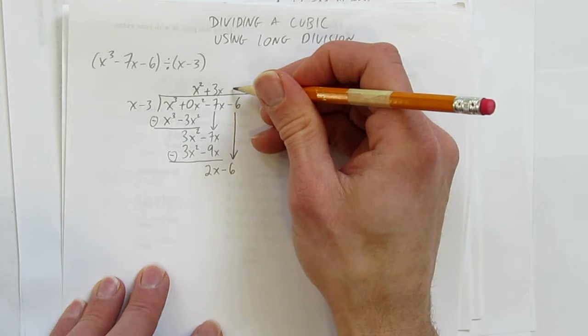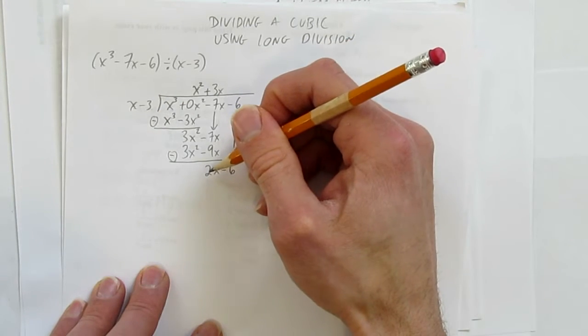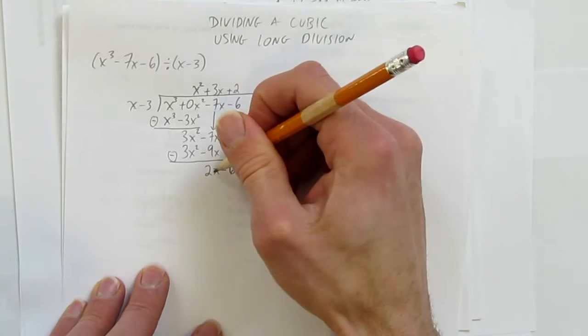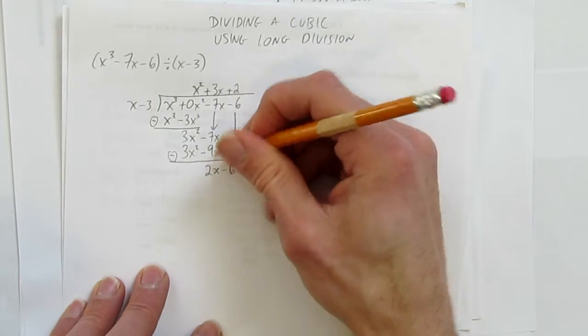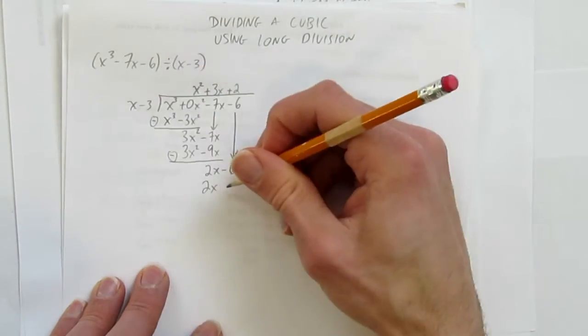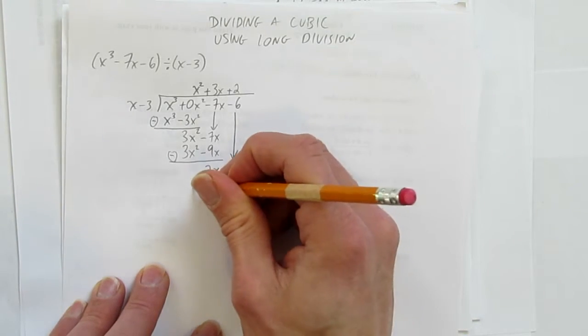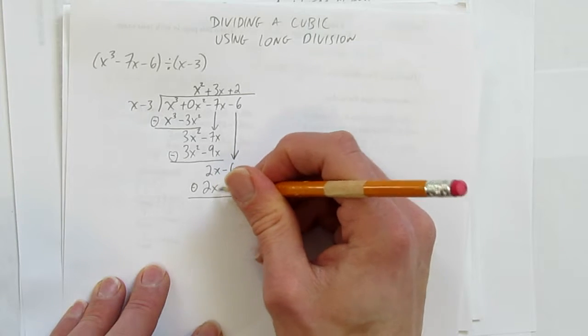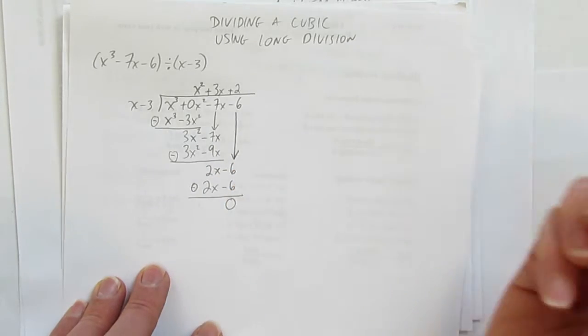What times x gives 2x? Obviously 2, because 2 times x gives 2x. Multiply 2 times both terms: 2 times x is 2x, and 2 times -3 is -6. Subtract: 2x - 2x is 0, and -6 - (-6) is 0. It went in perfectly.